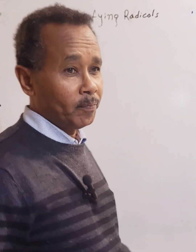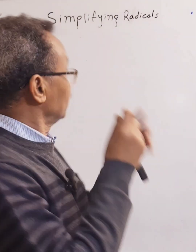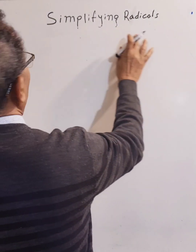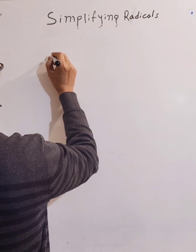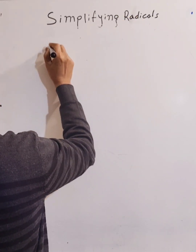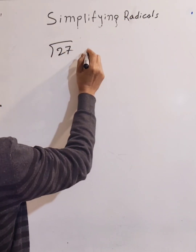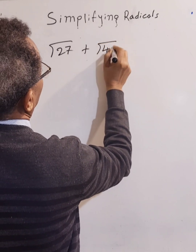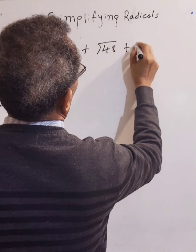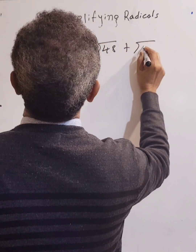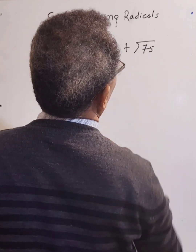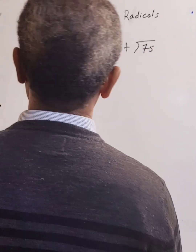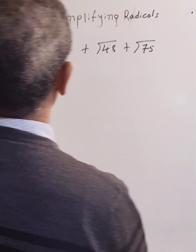Hi everyone, let's simplify radicals. We have square root of 27 plus square root of 48 plus square root of 75. Let's simplify each radical individually.